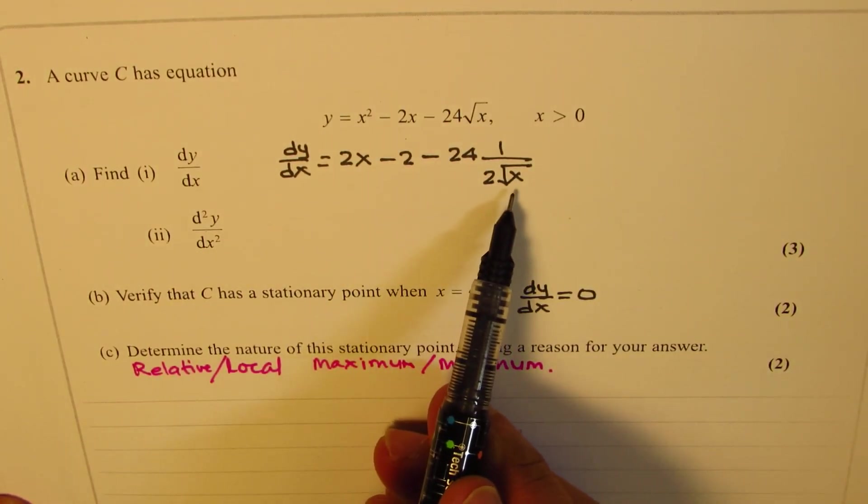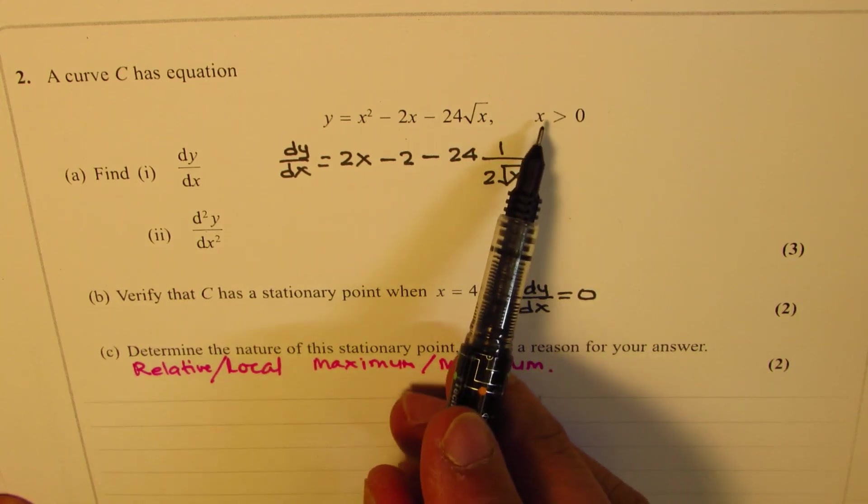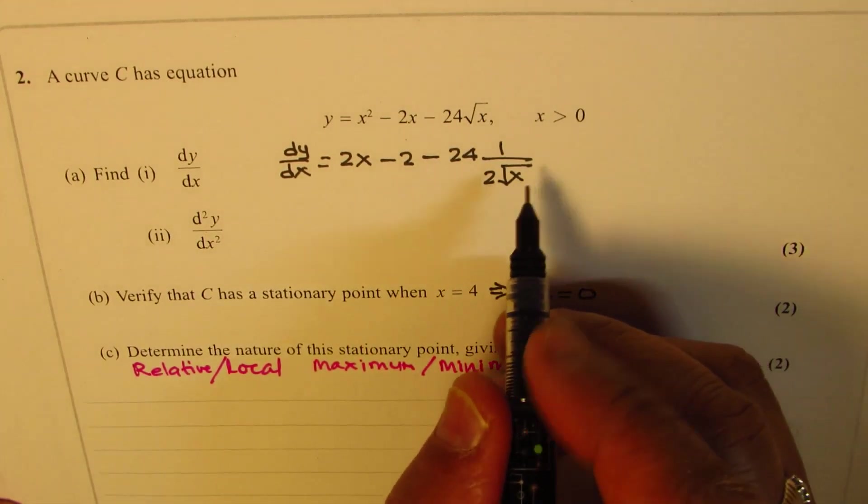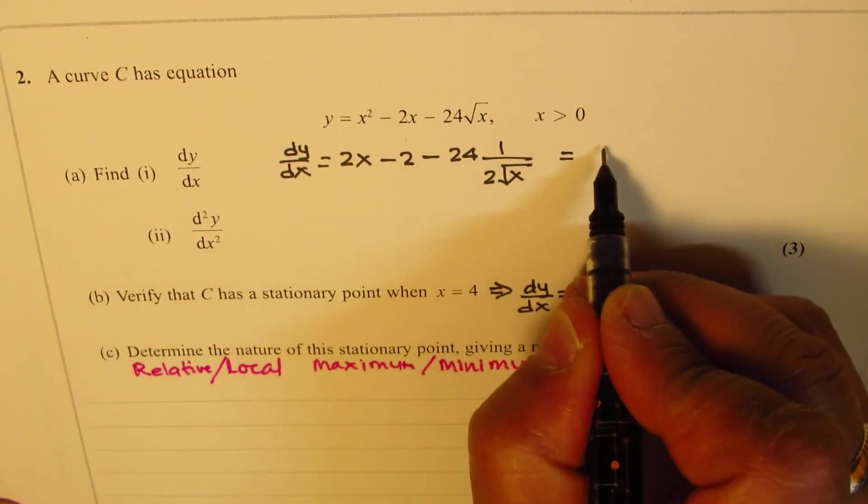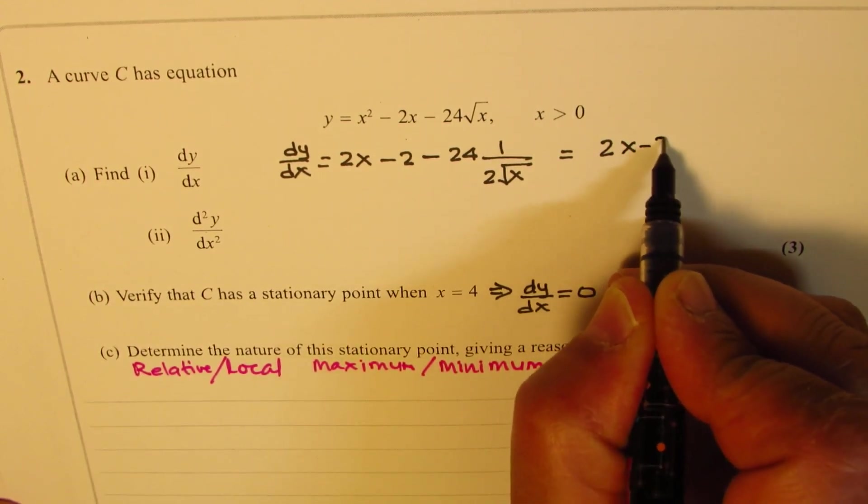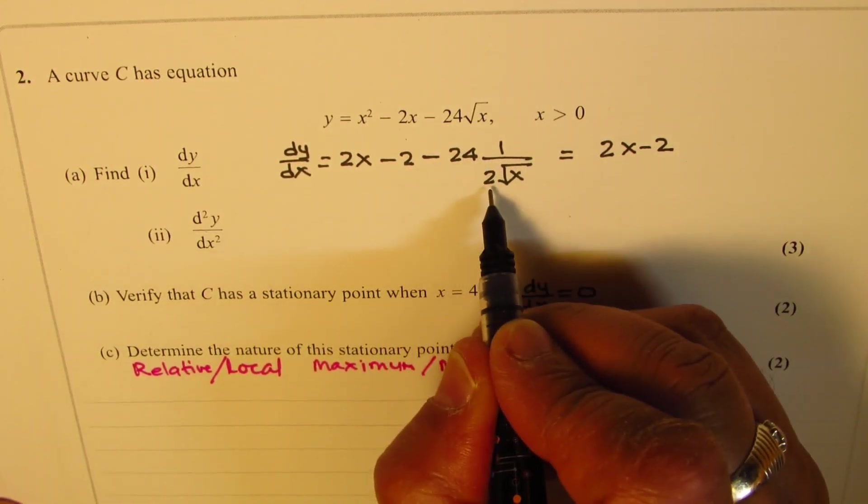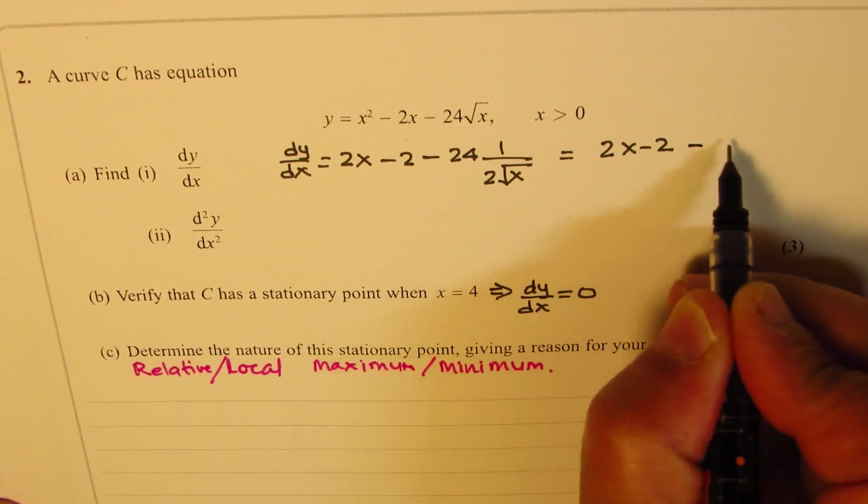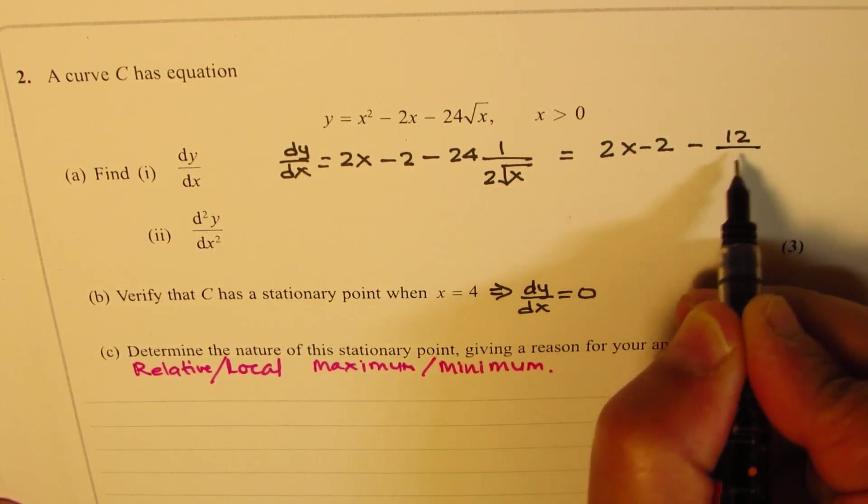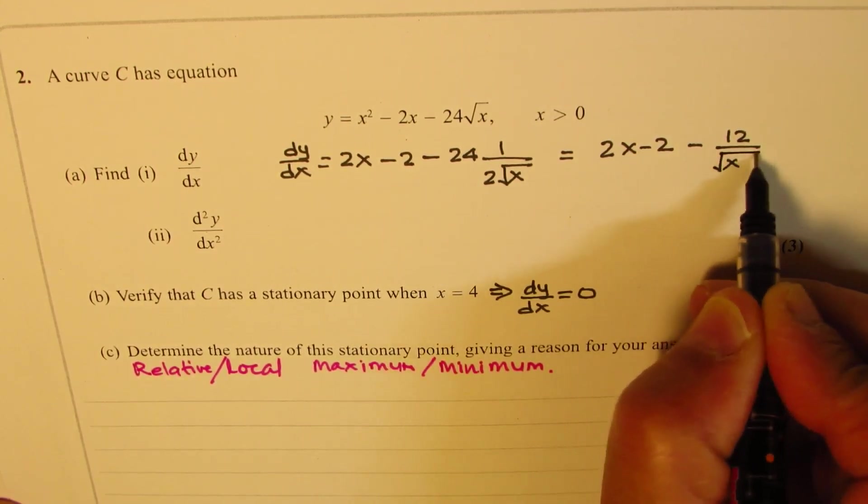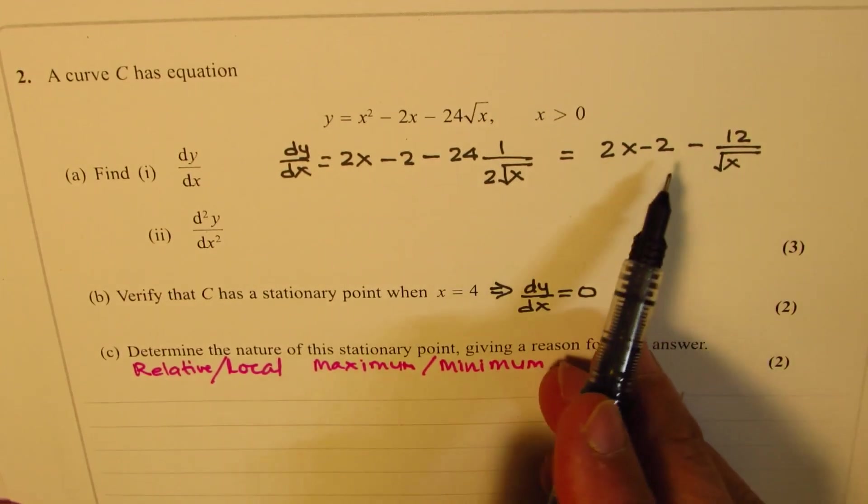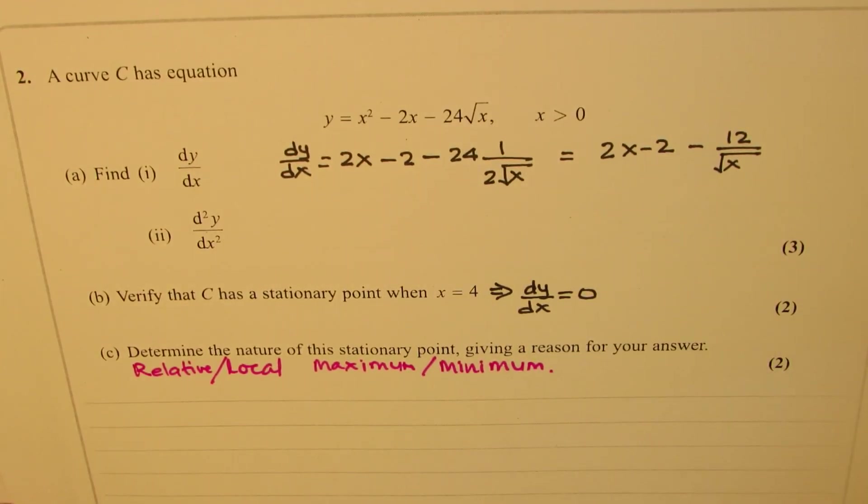Clearly we have a restriction that x cannot be 0, so that makes sense. Now this could be written as 2x minus 2. 24 divided by 2 is 12, so we have minus 12 over square root x. So that becomes our first derivative.